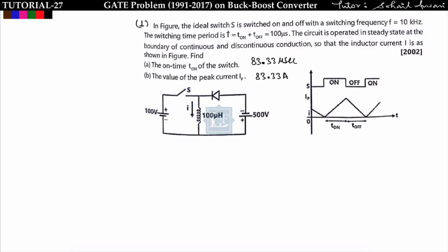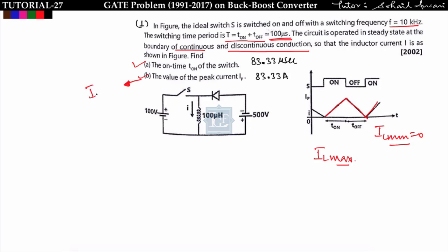Let us move to the first question. In the figure, the ideal switch is switched on and off with switching frequency f = 10 kHz. The switching time period T = T_on + T_off = 100 microseconds. The circuit is operated at the boundary of continuous and discontinuous conduction, meaning the inductor current waveform just touches zero, so il_minimum = 0. We need to find the t_on time and the peak current ip (which equals il_max).